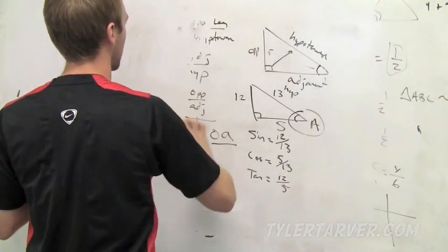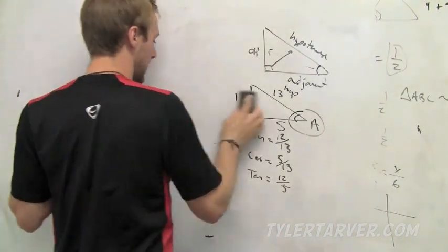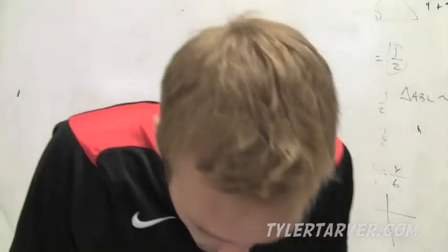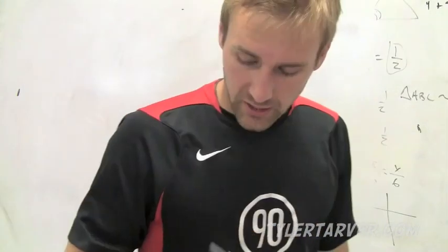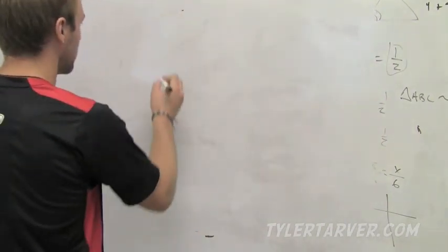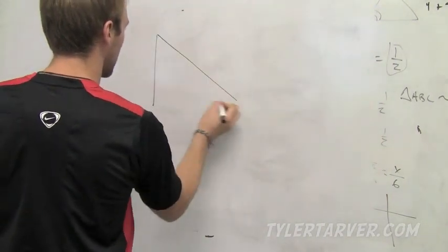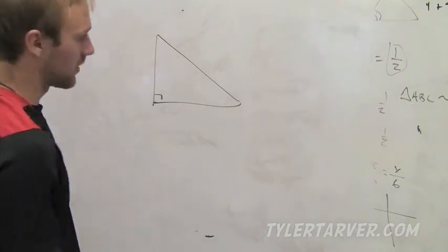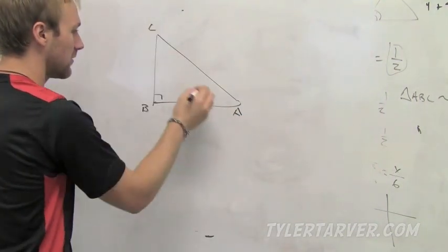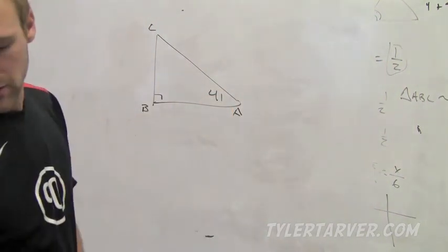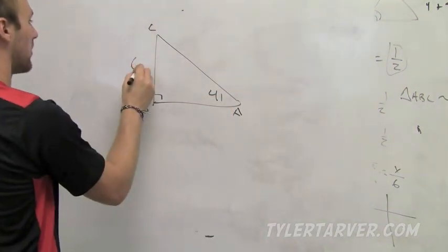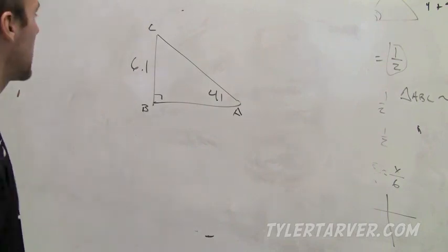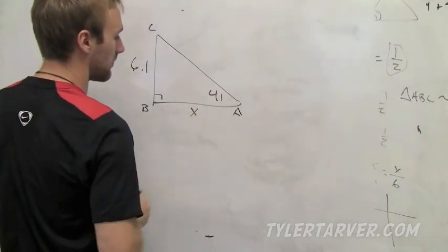While I'm erasing this, you can think about how much you'd rather be outside than doing what you're doing right now. Let's say we've got ourselves a right triangle. We'll label it A, B, C, 41 degrees, and 6.1. And let's say we want to find the measure of AB, we want to find this measure right here.